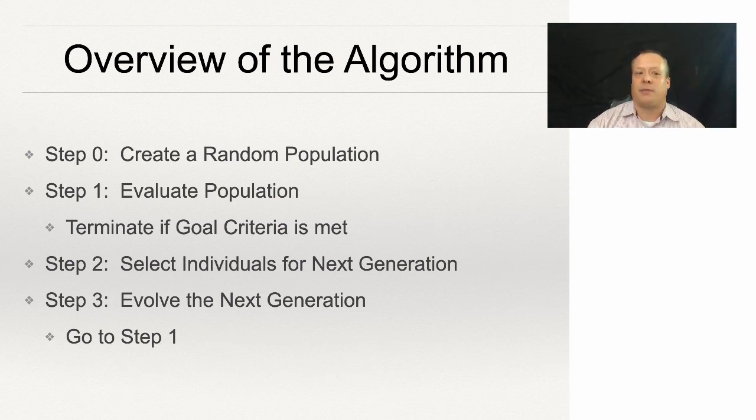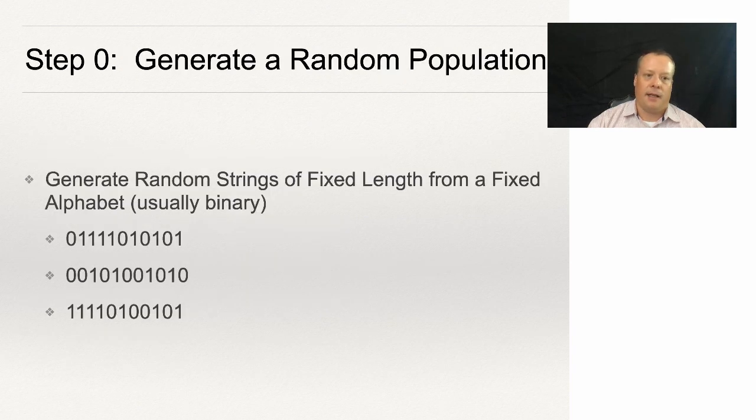Step zero: generate random strings of a fixed length from a fixed alphabet, usually binary—very simple, right? And you can imagine how each of these strings could be the encoding of a particular beta.